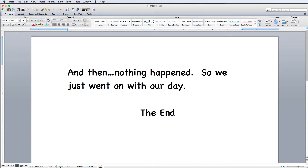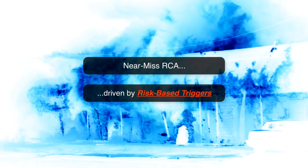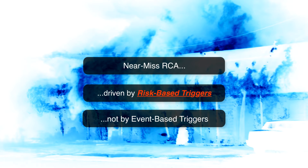Is this something that we should look at more closely, or should we just ignore it? A near miss root cause analysis is initiated by one or more risk-based triggers. This is in contrast to event-based triggers, which require that an actual adverse event occur before an RCA is performed. Risk-based triggers instead focus on what could have occurred, how likely it is to occur in the future, and how bad it could be if it does happen.